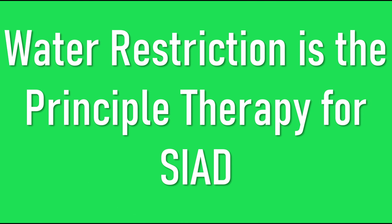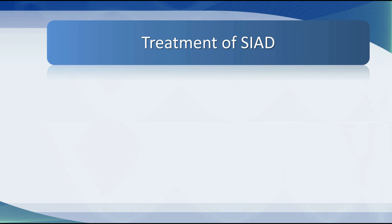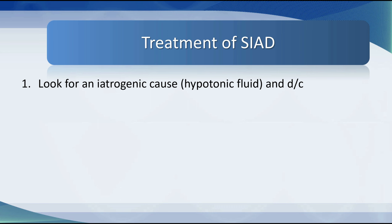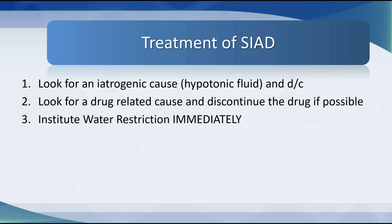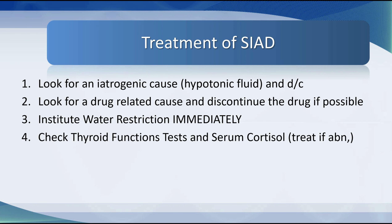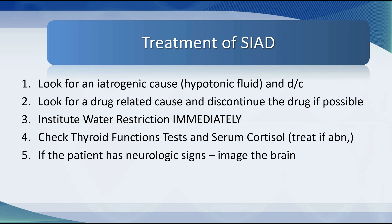The treatment of SIADH depends on the cause, but the principal therapy is water restriction. The in-a-nutshell approach: look for an iatrogenic cause such as hypotonic fluid and discontinue it; look for a drug-related cause and discontinue the drug if possible; institute water restriction immediately; check thyroid function tests and serum cortisol and treat if abnormal.